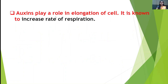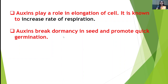Auxins play a role in elongation of cells and are known to increase the rate of respiration. Seedlings move in the direction of light and produce cell elongation. Auxins break dormancy in seeds and promote quick germination.